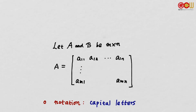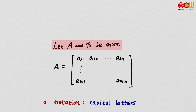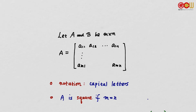Notation: We will use uppercase capital letters to denote matrices. Suppose we have two matrices A and B, both of them m by n. We say matrix A is square if m is the same as n — then A is a square matrix.